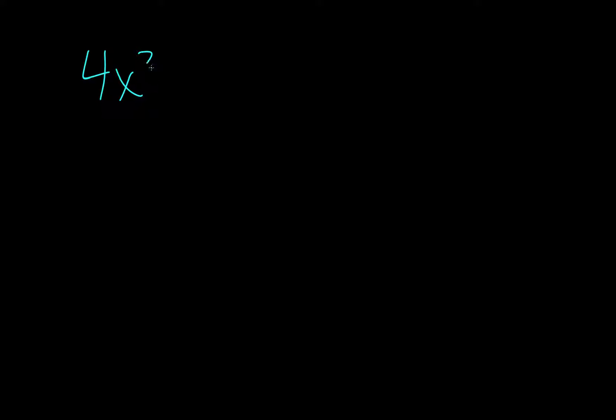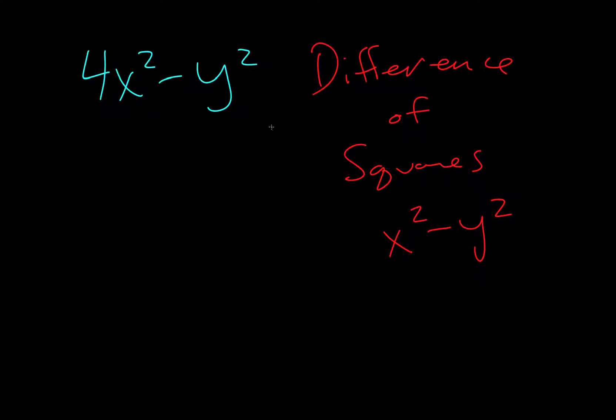The first one we're going to do is difference of squares. So if you have something that is something squared minus something squared, it's called difference of squares. Essentially it's x squared minus y squared, something squared minus something squared.